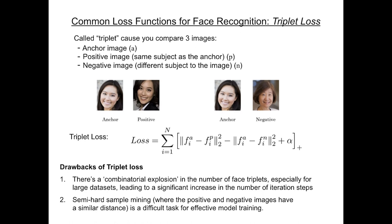There's a combinational explosion with large datasets, as larger numbers of images leads to an exponential number of pairings. Additionally, triplet loss requires semi-hard sampling in order to learn effectively.